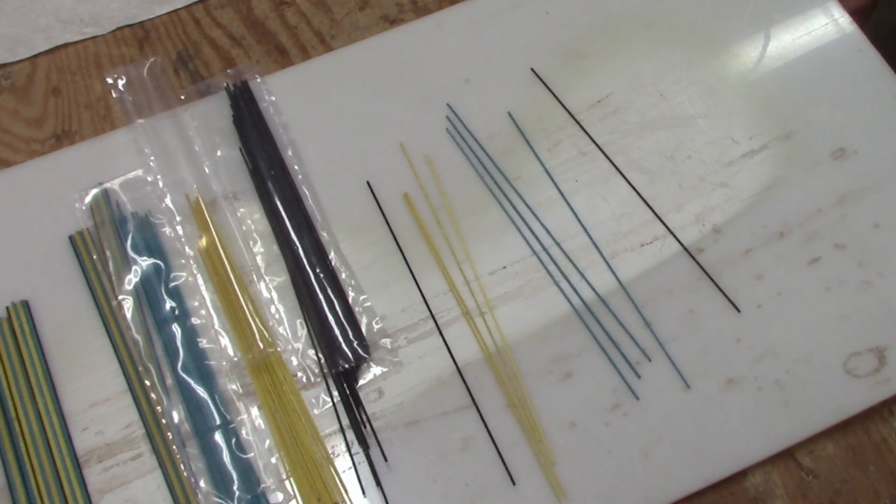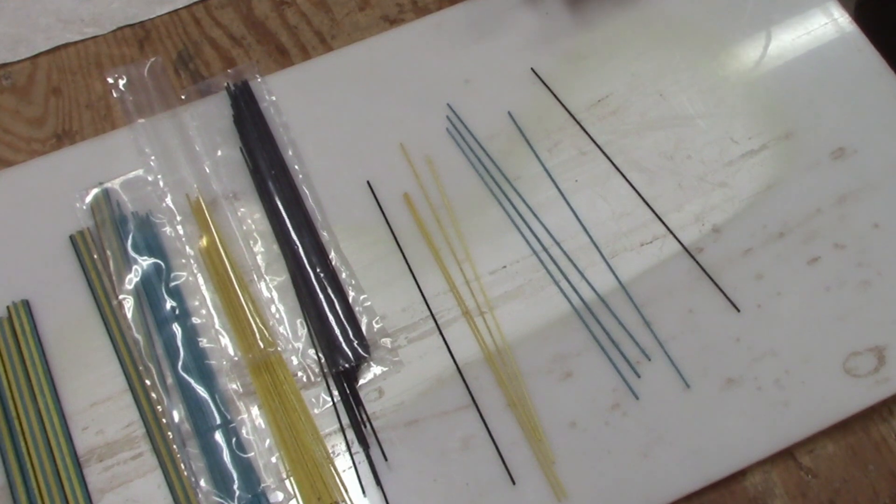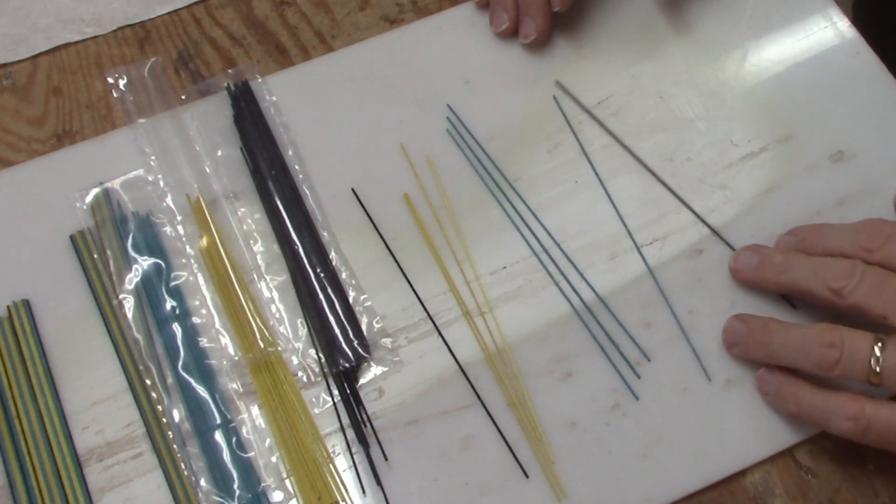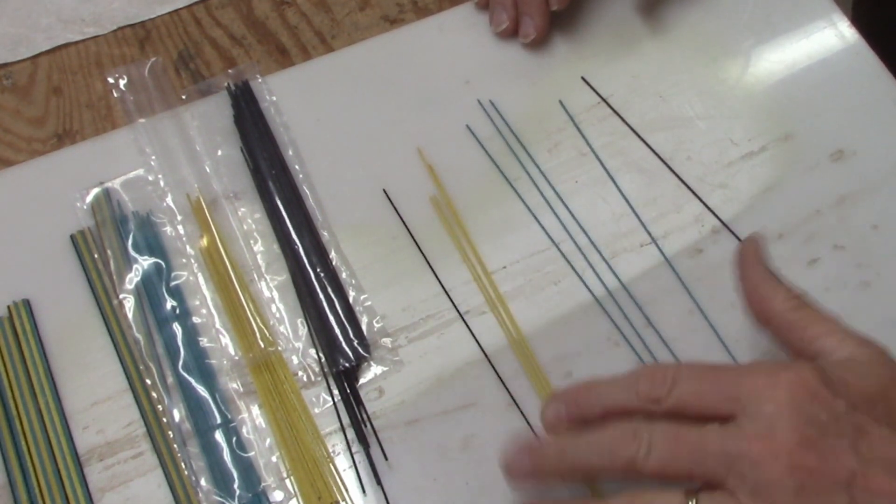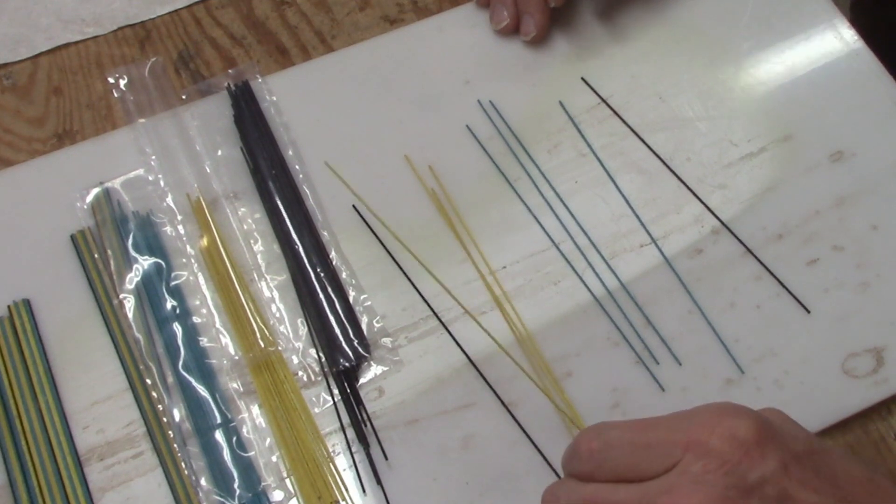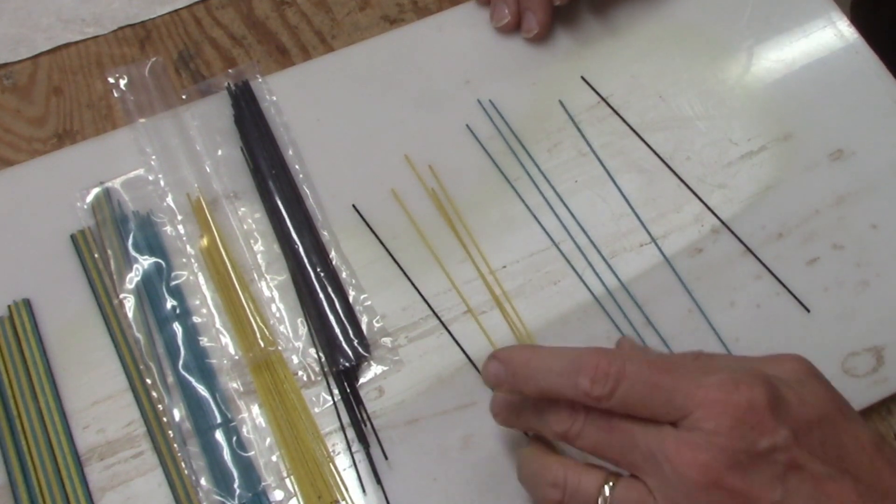I'm making a mosaic rosette for a classical guitar. The first step is to glue up a bunch of these one by one millimeter sticks of veneer that have been dyed the colors I want.